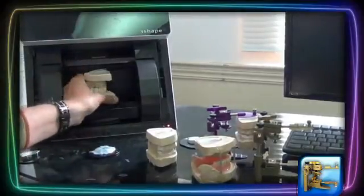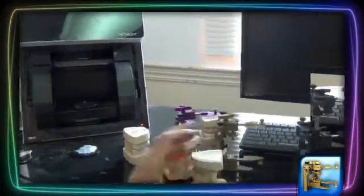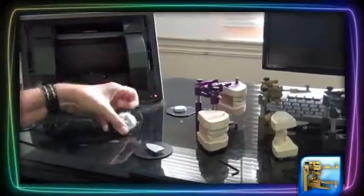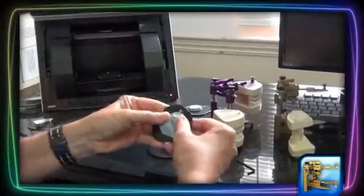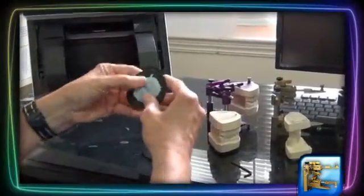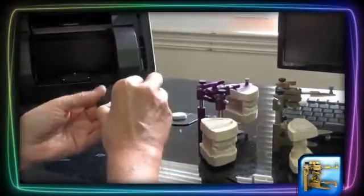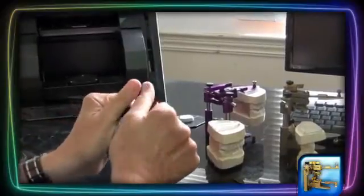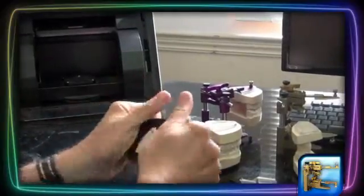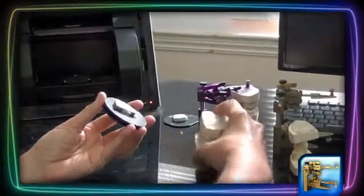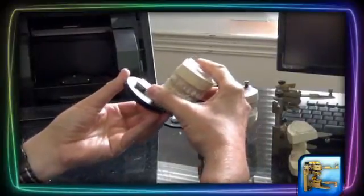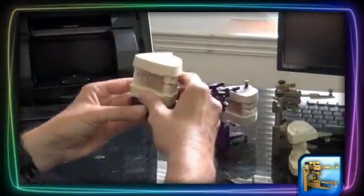What makes the adapter universal is that you have a number of ways that you can use it. Using the putty, all you do is take the putty and place it on your model holder. Now take the universal adapter and place it on top of the putty and squeeze it down to secure it. Slide the articulated models onto the adapter and it's ready for scanning.